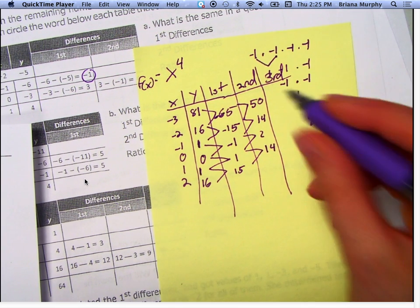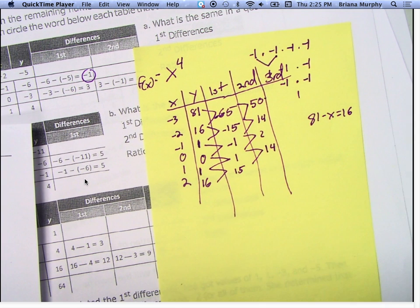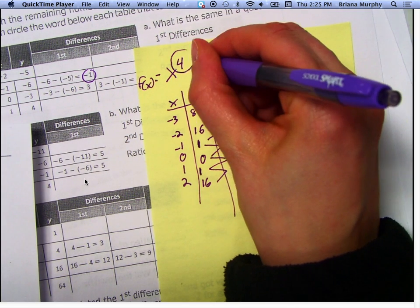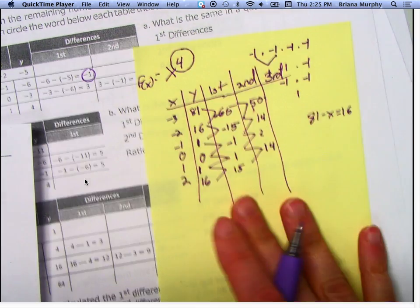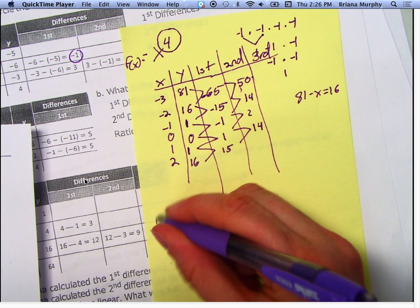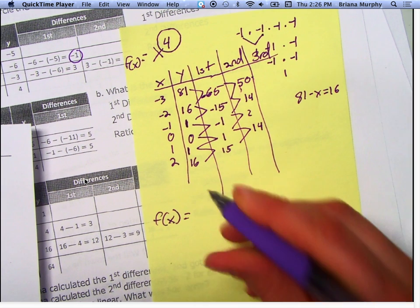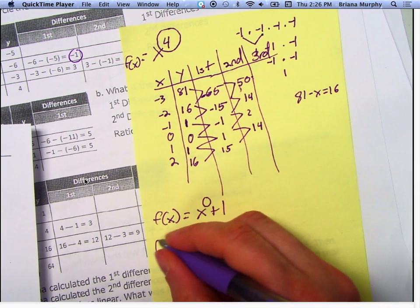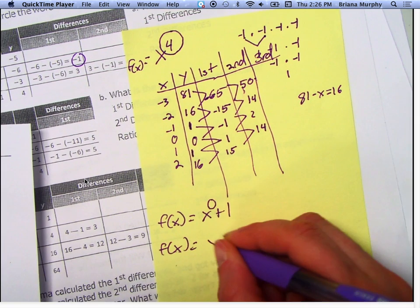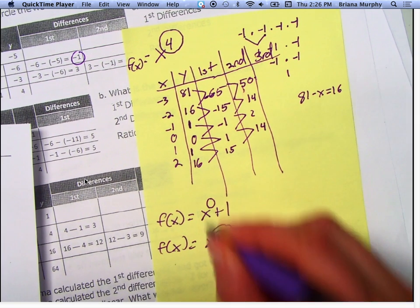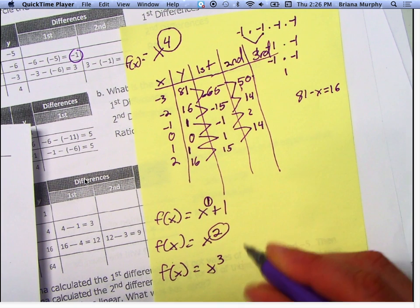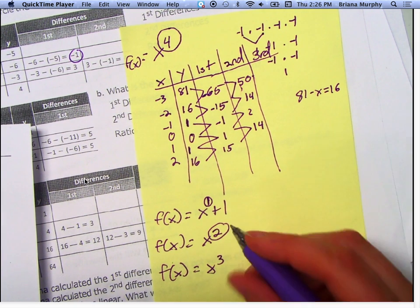Actually you have to go to the fourth. Look at this pattern: f(x) = x + 1 takes the first difference to be the same. f(x) = x² takes the second difference. f(x) = x³ would take three differences. So x to the fourth would take four differences to be the same.